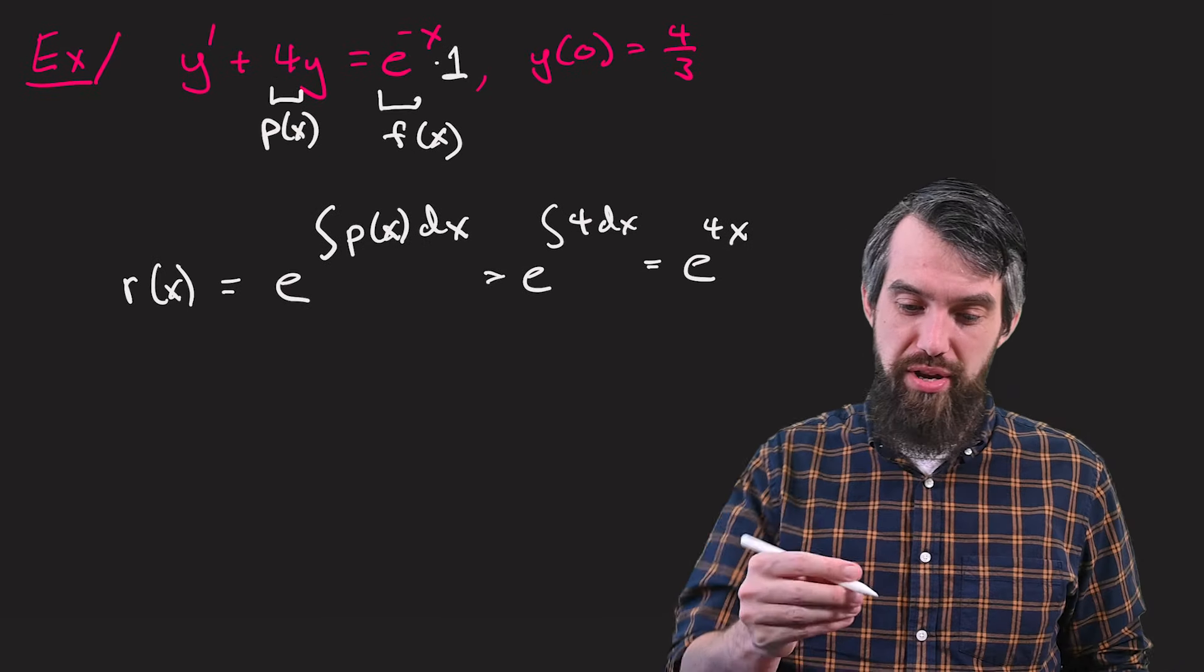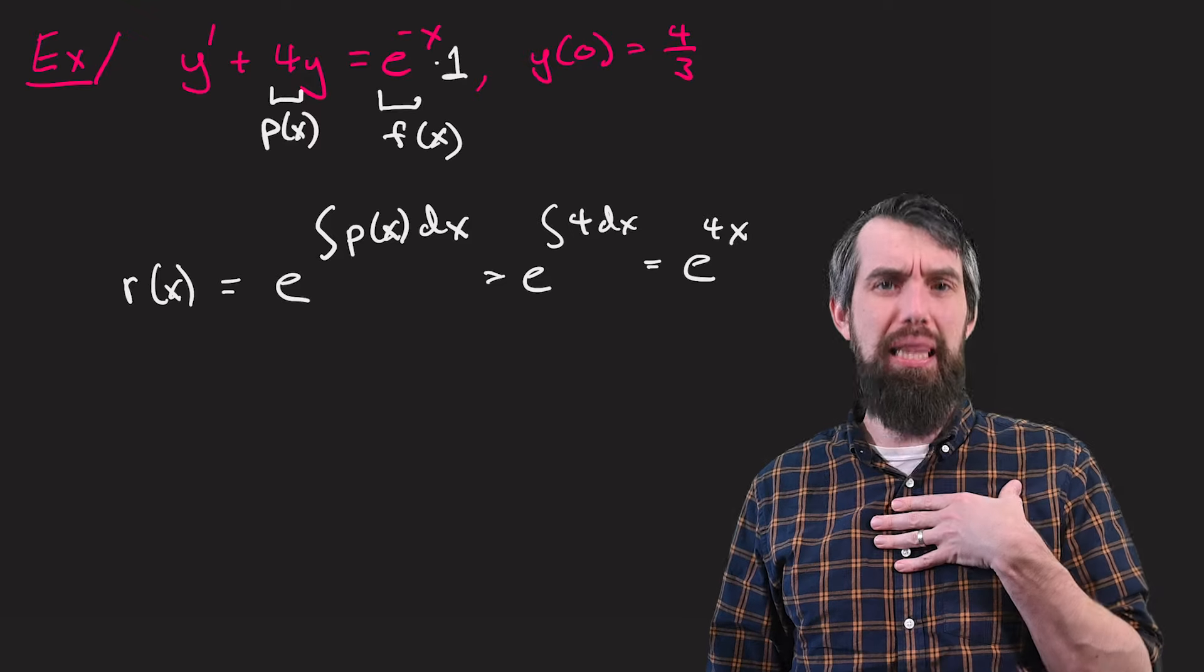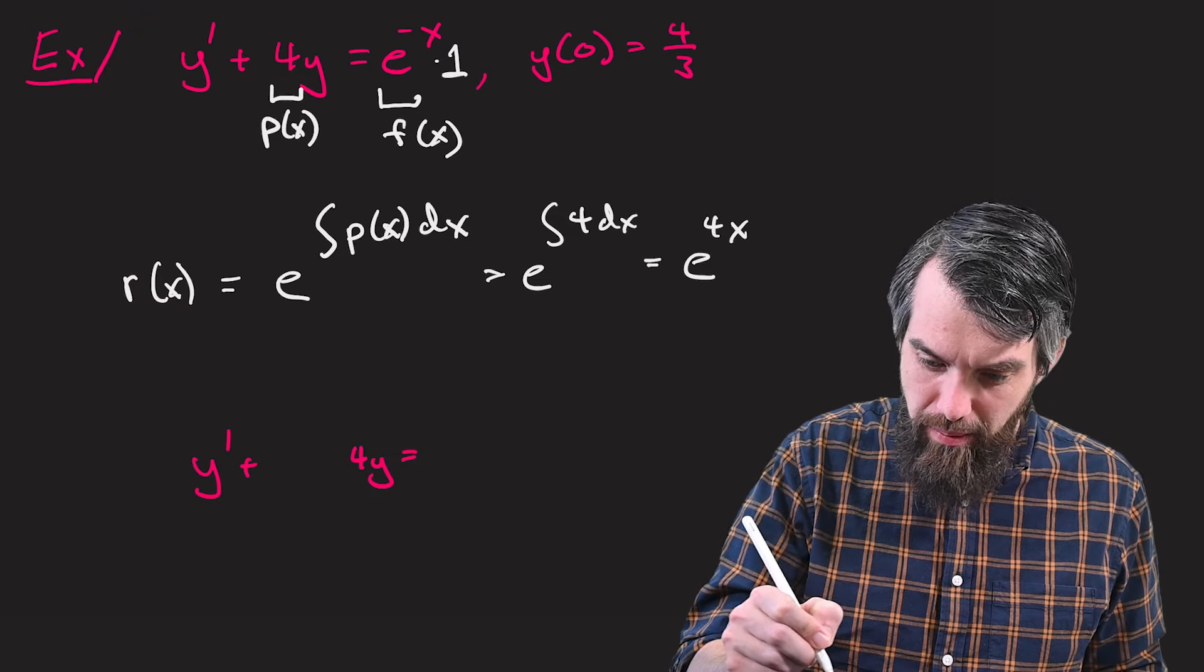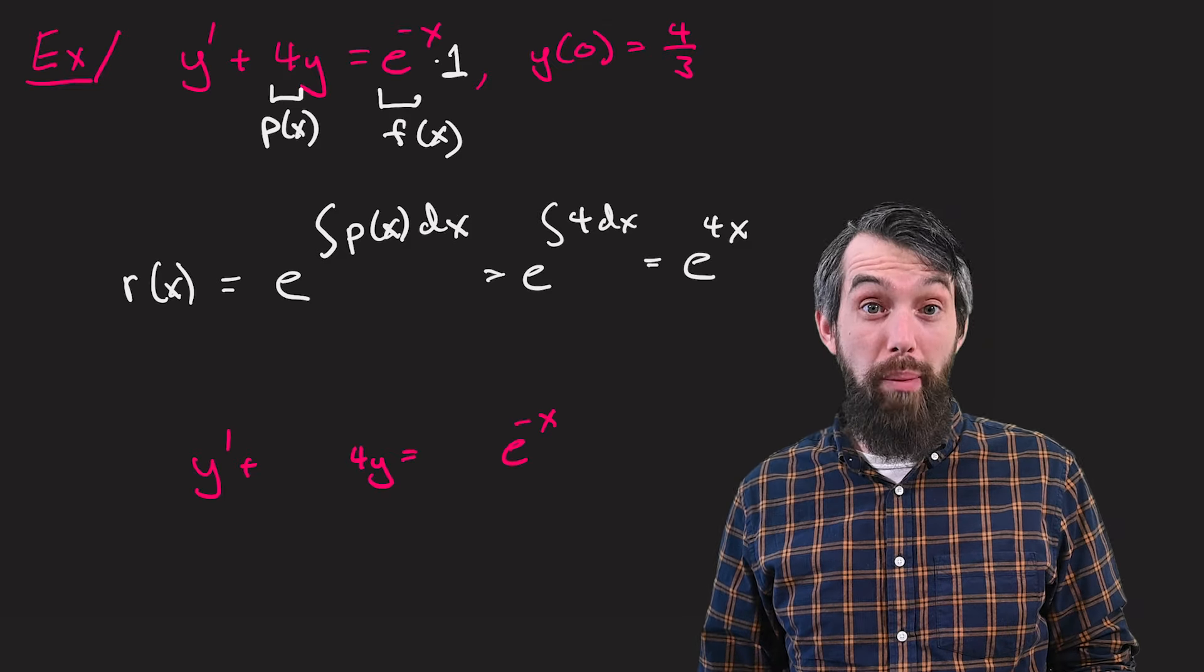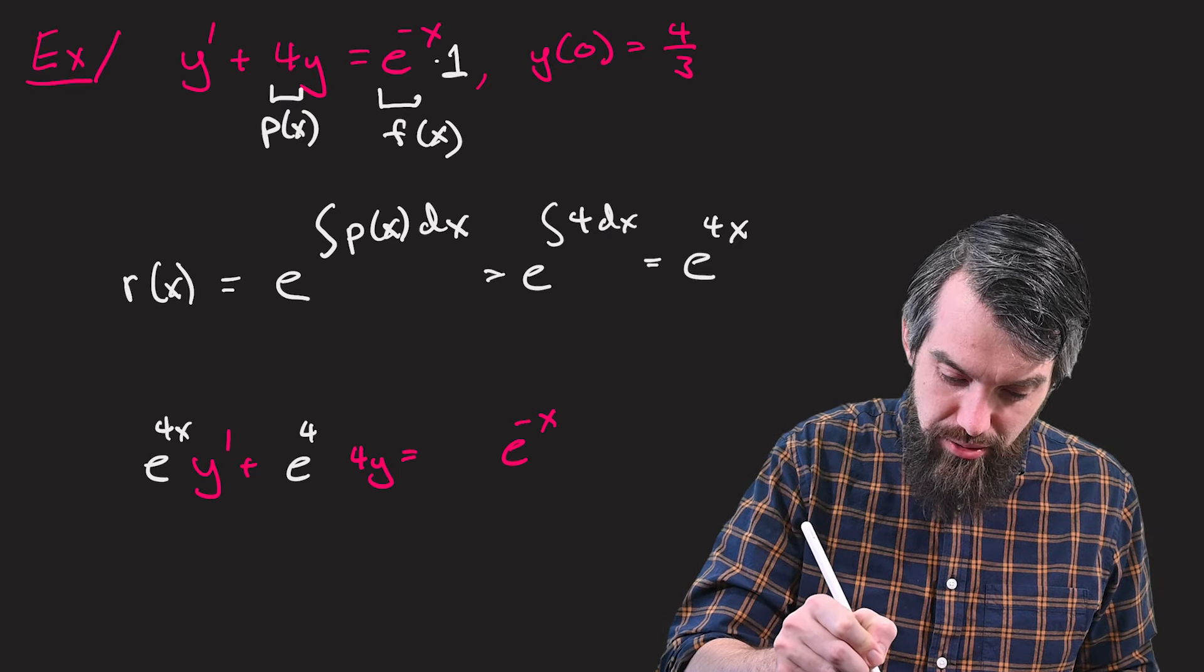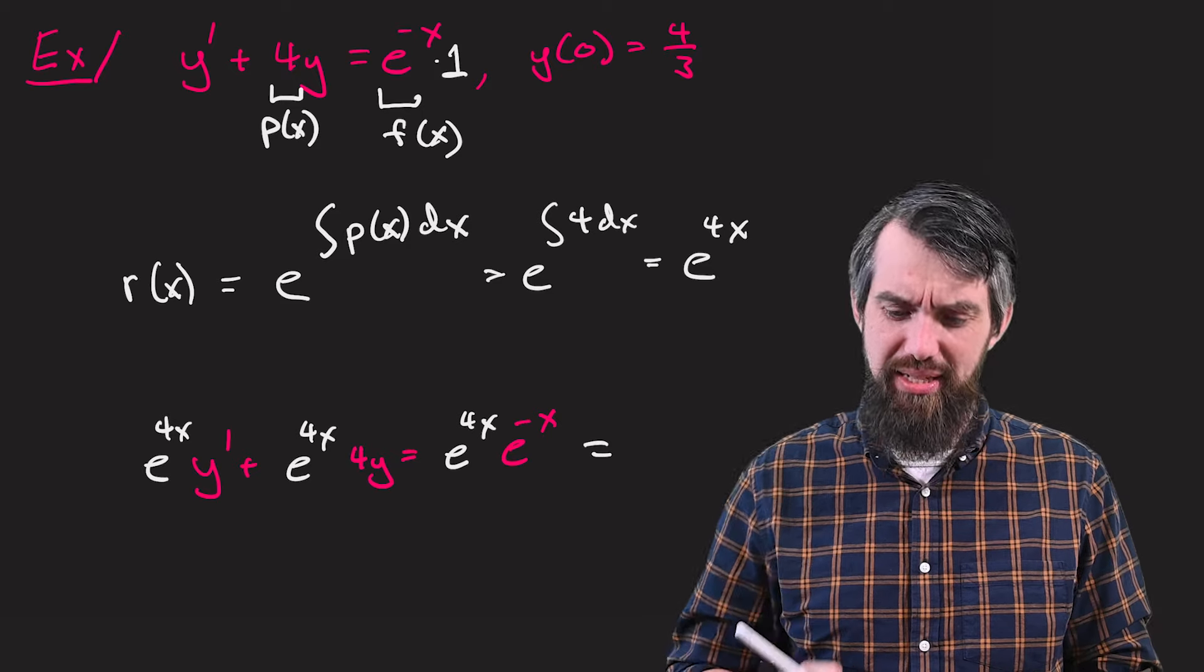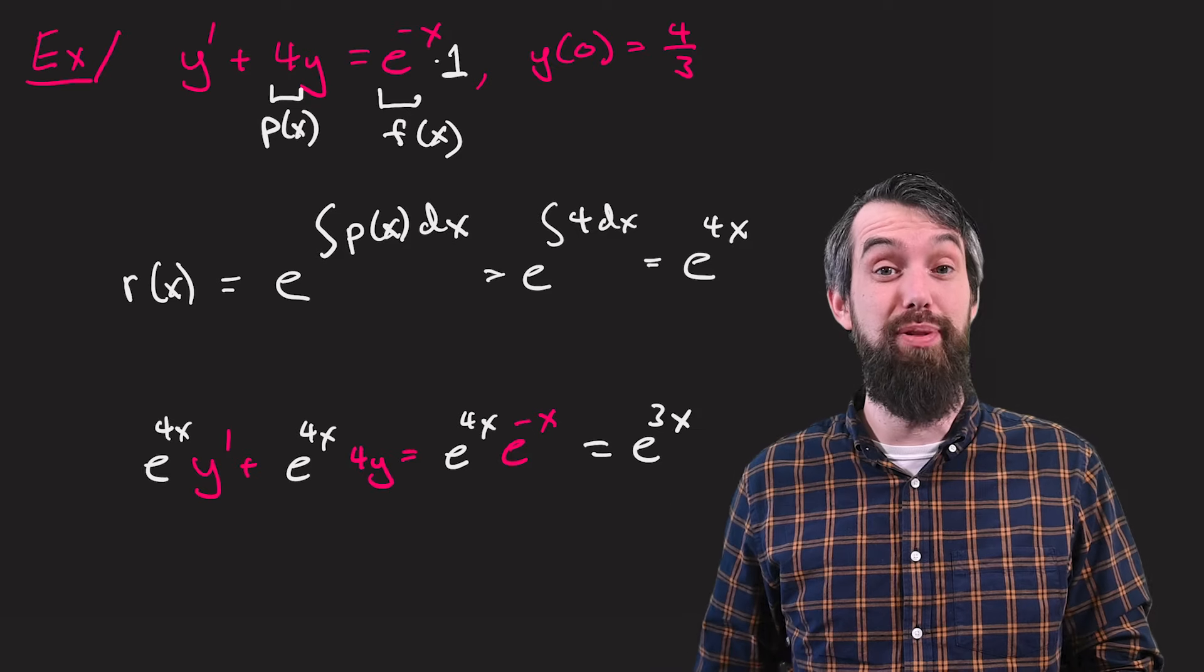Okay, so the next step I want to do in my method of integrating factors is I'm going to copy down the equation, and I'm going to leave a little bit of space there. The method of integrating factors is all about taking every single term and multiplying by that integrating factor. Maybe I'll just do a little simplification on the far right-hand side and see that e to the 4x times e to the minus x is the same thing as e to the 3x.